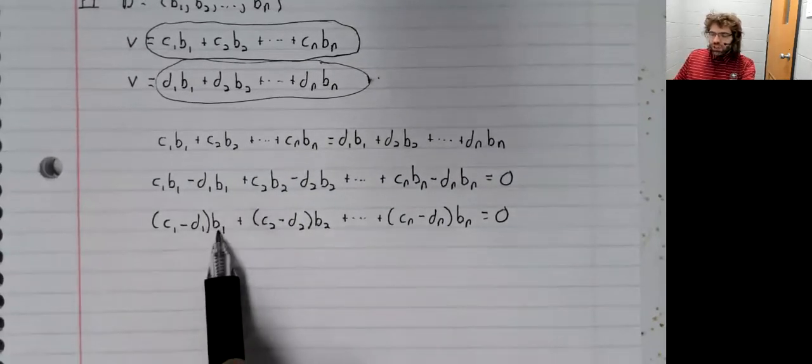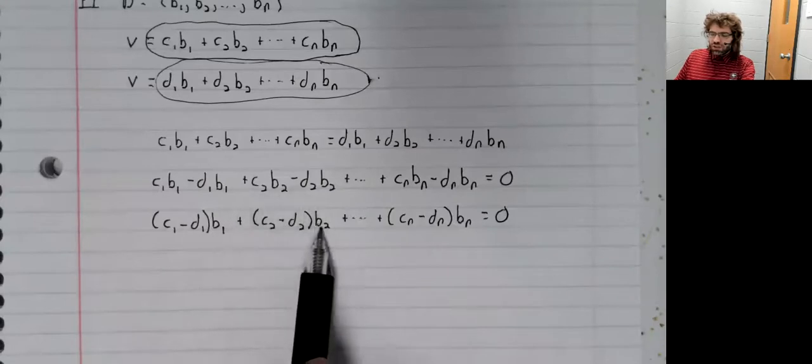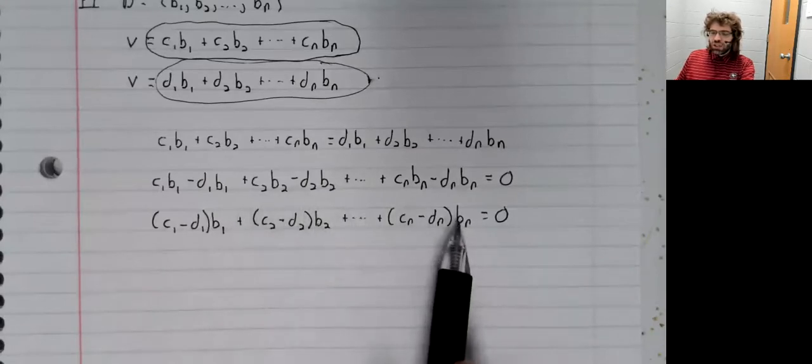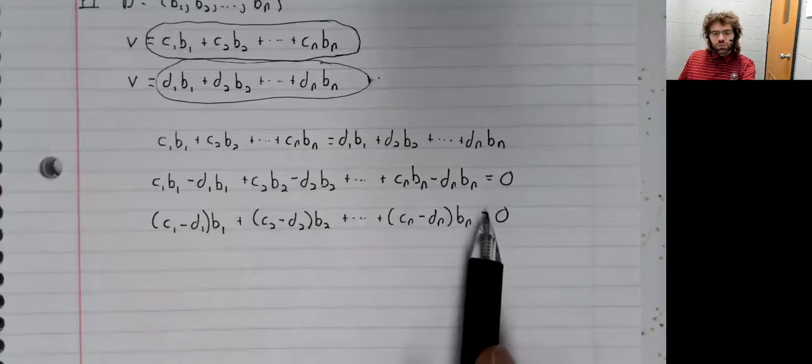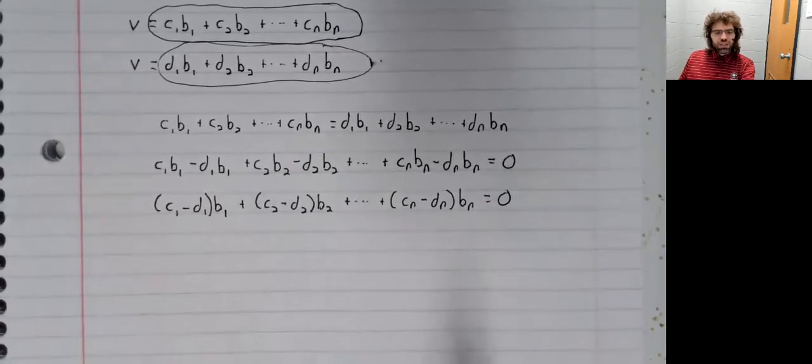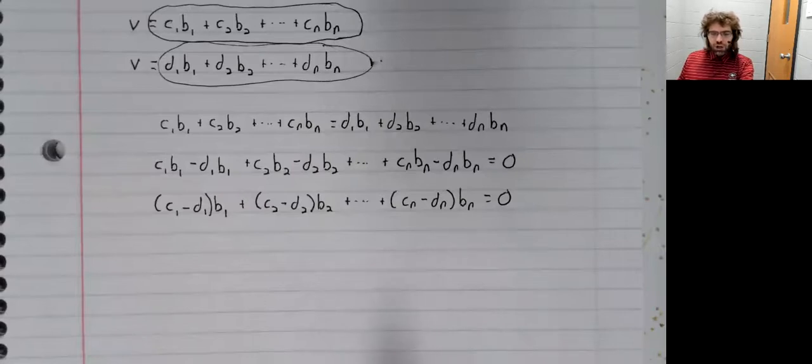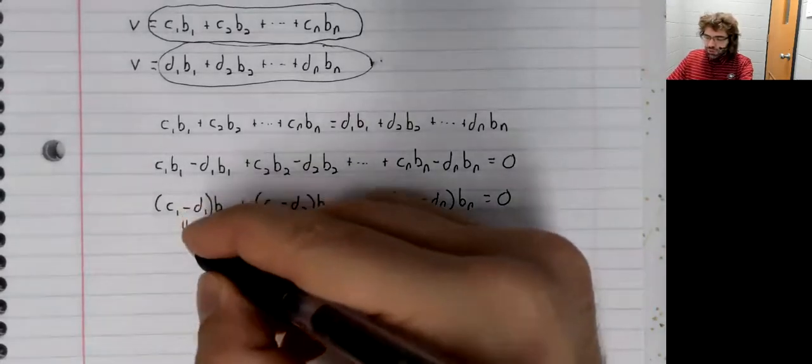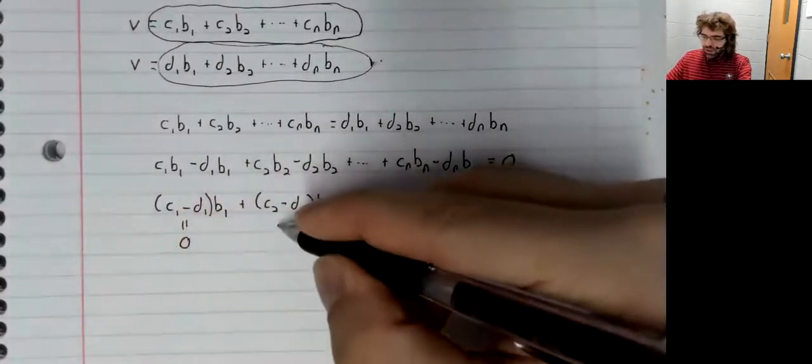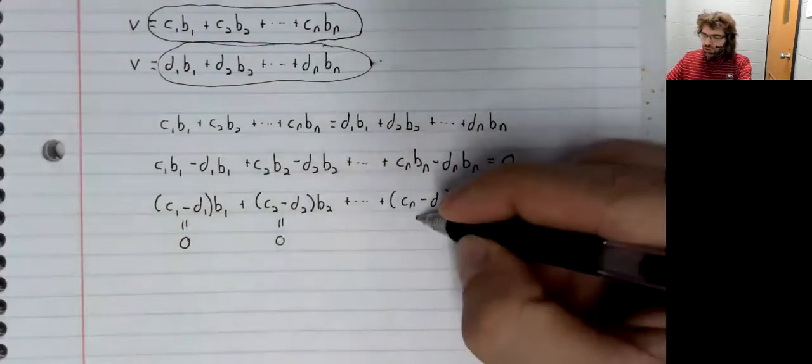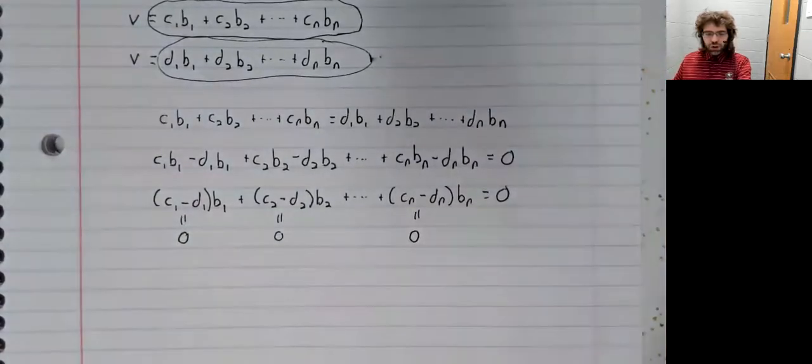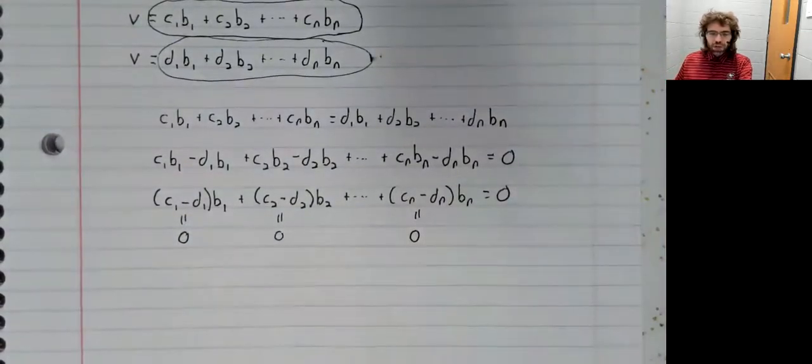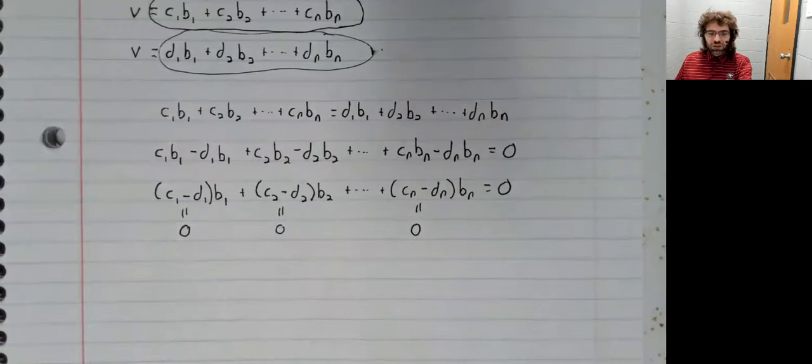And now what's this? A linear combination of these basis vectors is equal to zero. But basis vectors are linearly independent. The only linear combination of the basis vectors that can equal zero is the trivial linear combination where all these coefficients are zero.